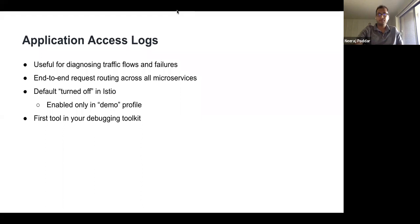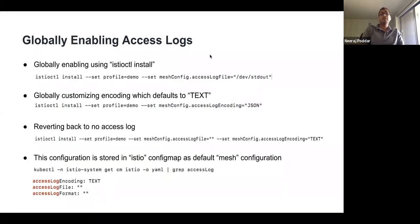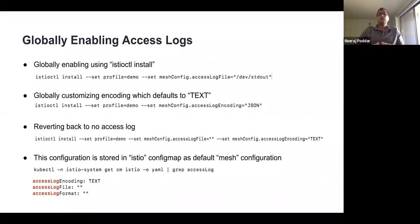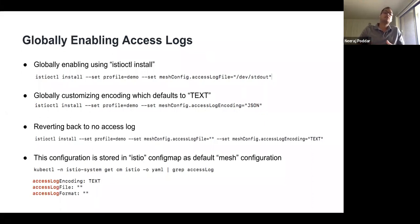To globally enable access logs, use the istioctl install command and set the accessLogFile option in meshConfig to /dev/stdout. This enables access logs throughout your cluster for all proxies including sidecars and gateways. The default encoding is text, with fields separated by spaces, which can be hard to read in production. You can change the access log encoding to JSON for key-value pairs. To revert, set the accessLogFile option to empty. Your current setting is stored in the istio ConfigMap in the istio-system namespace.